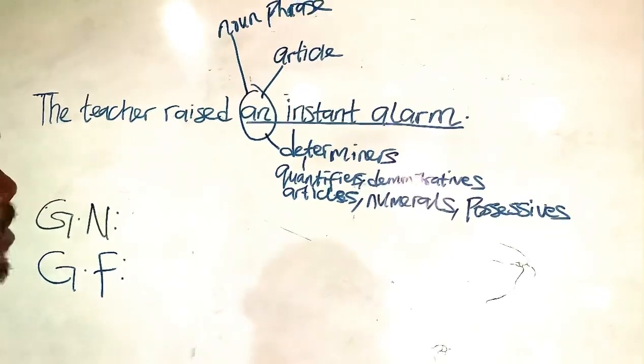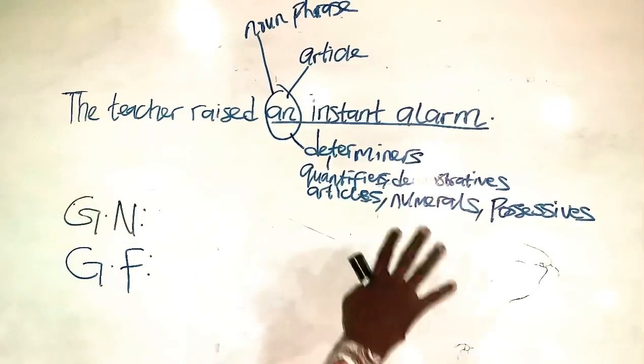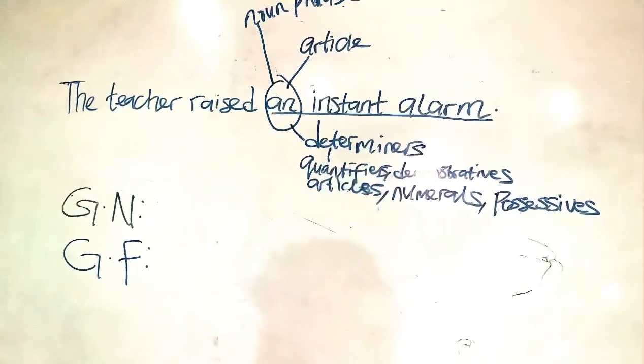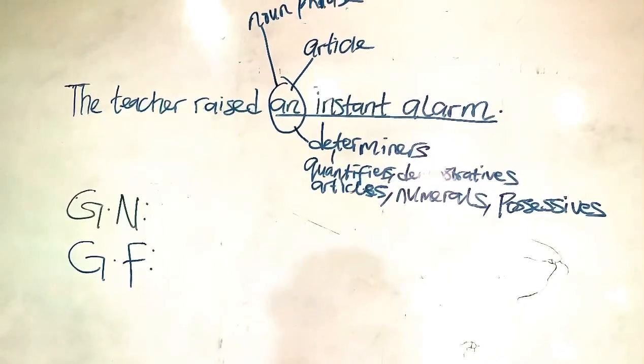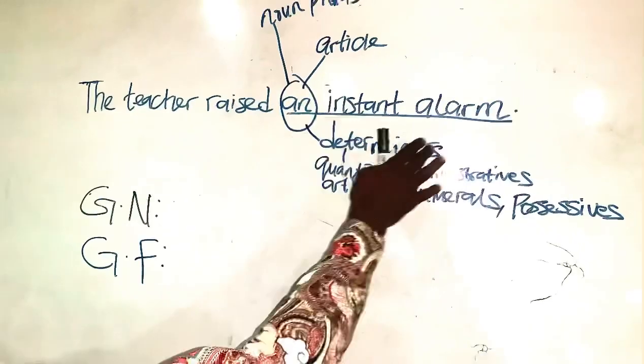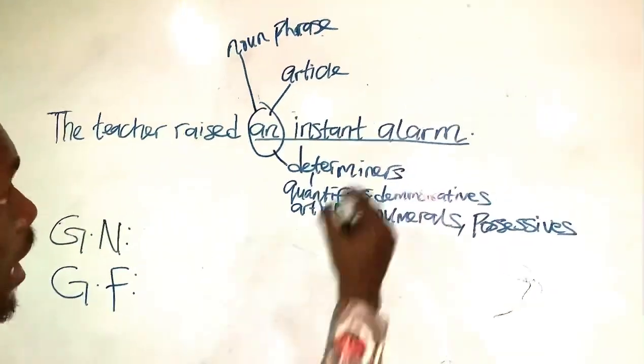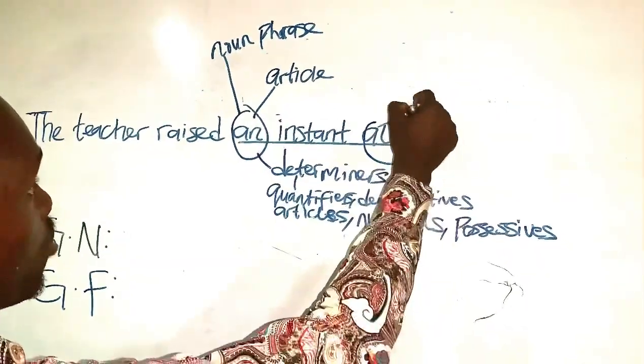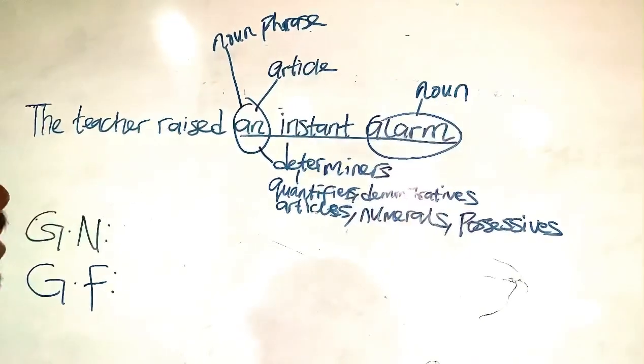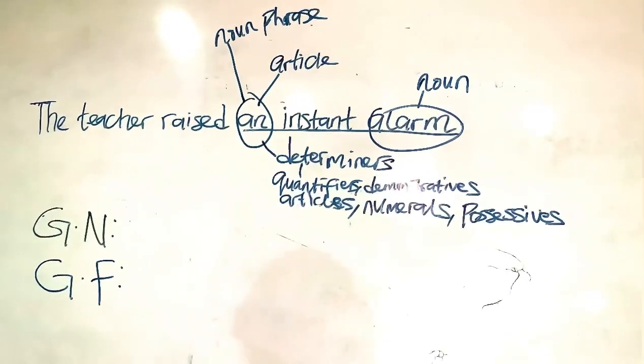One of the easiest ways to identify a noun phrase is through the determinants. Another way you can identify a noun phrase is the head word. The head word here is alarm. The head word of a noun phrase must be a noun. That's another way you can identify a noun phrase.